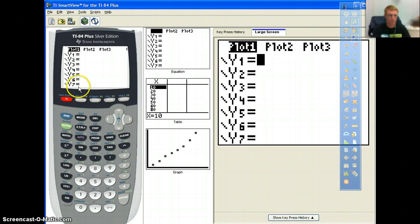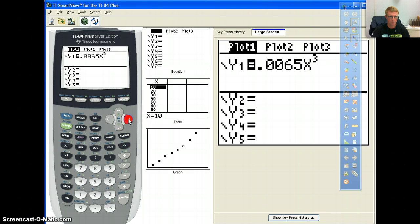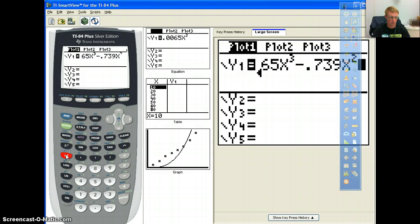So we're going to go to our y equals, and we're going to leave the stat plot on, and we're going to actually type this in. So this is going to be 0.0065x to the third, minus 0.739x squared, plus 49x, minus 236. And we just approximated it.